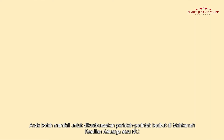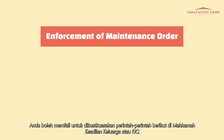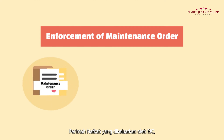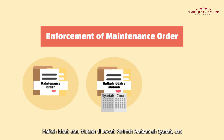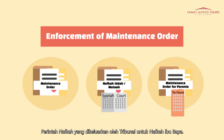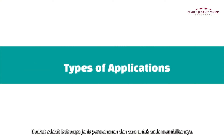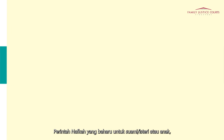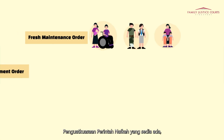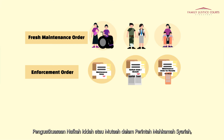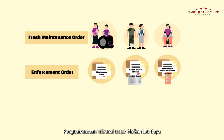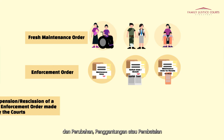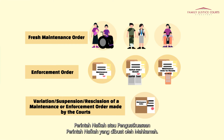You can file to enforce the following orders at the Family Justice Courts (FJC): maintenance orders issued by FJC; Nafkah Iddah or mutah under a Syariah court order; and maintenance orders issued by the Tribunal for the Maintenance of Parents. The various types of applications you can file include: fresh maintenance orders for a spouse or child; enforcement of an existing maintenance order; enforcement of Nafkah Iddah or mutah under a Syariah court order; enforcement of a Tribunal for the Maintenance of Parents order; and variations, suspensions, or rescissions of a maintenance or enforcement order made by the courts.